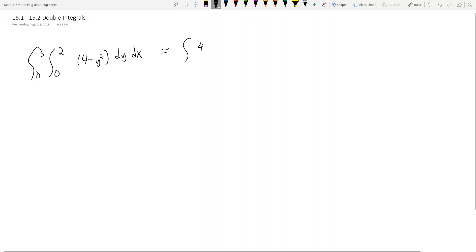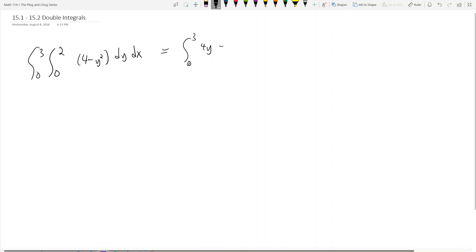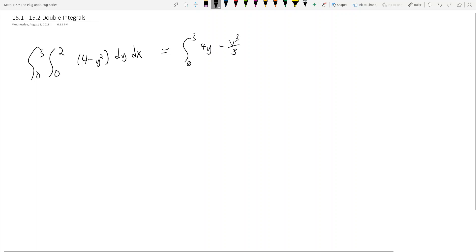4 right, so the integral of 4 with respect to y is 4y, and the integral of negative y squared with respect to y is going to be negative y cubed over 3. Makes sense. Now I've got to evaluate this guy from 0 to 2 first, and then after I evaluate that, then I have one more integral to go with respect to dx. Essentially I took the first guy and integrated it with respect to y.